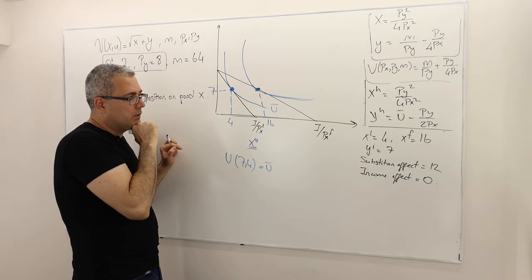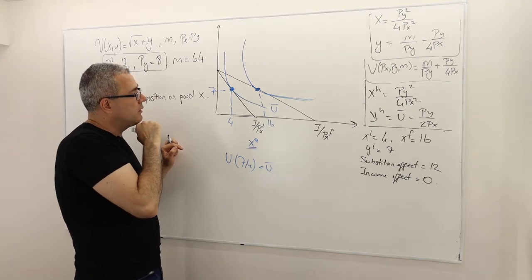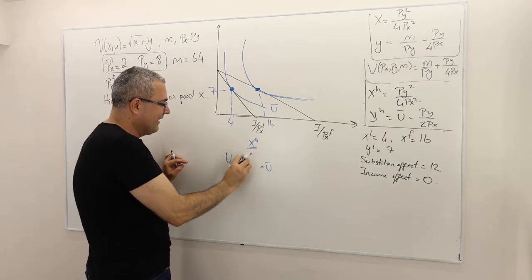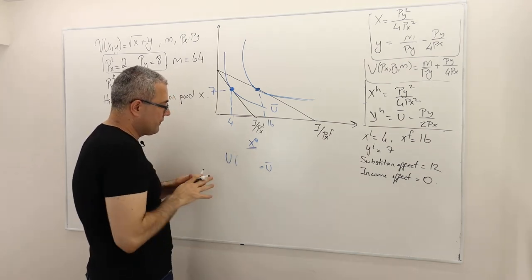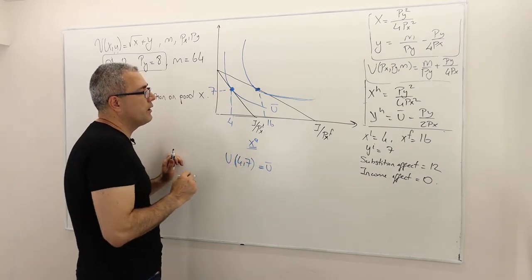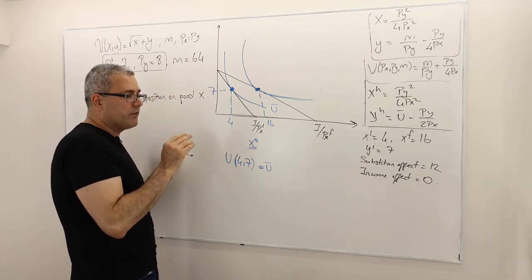Professor, it's utility 4, 7 I think, not 7, 4. Yeah, U of X. Exactly. I'm sorry. So the X is 4 and Y is 7. So this is my U bar. So let me repeat. Thank you very much.